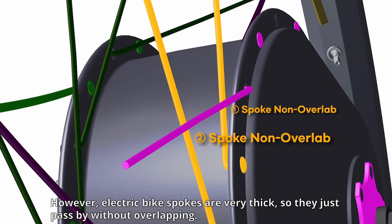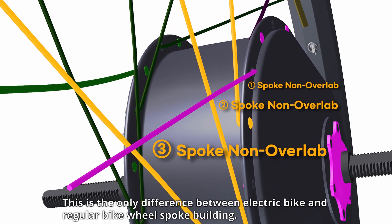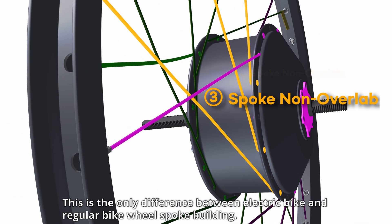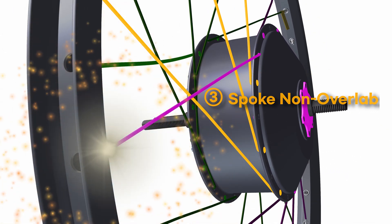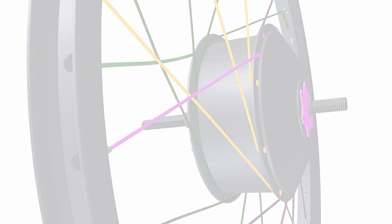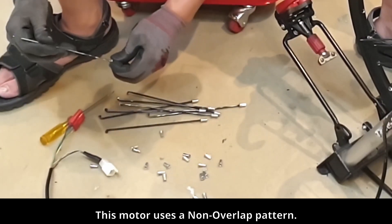However, electric bike spokes are very thick, so they just pass by without overlapping. This is the only difference between electric bike and regular bike wheel spoke building. This motor uses a non-overlap pattern.